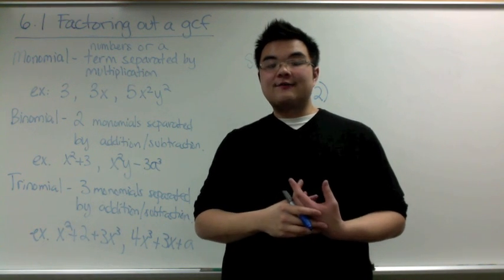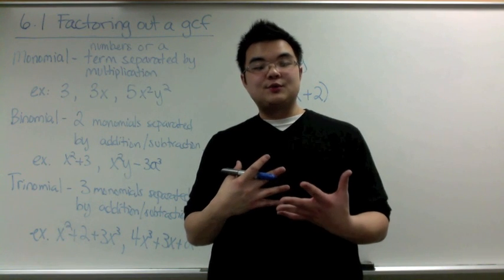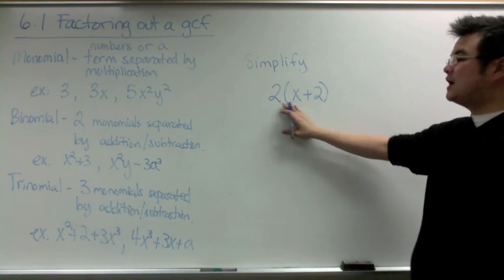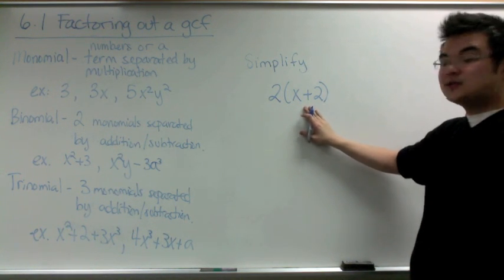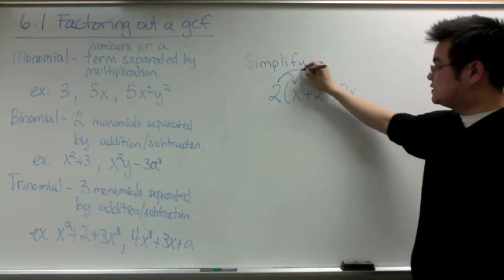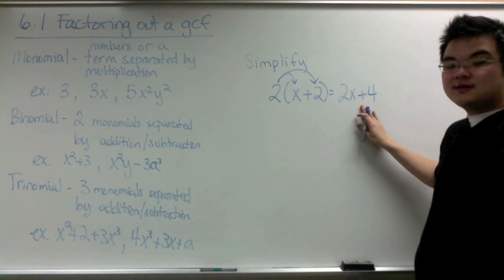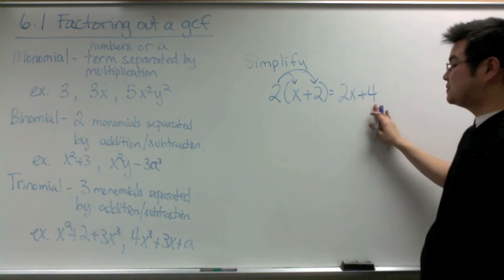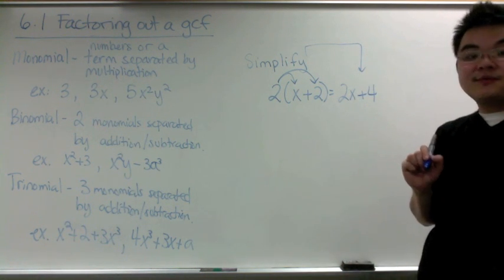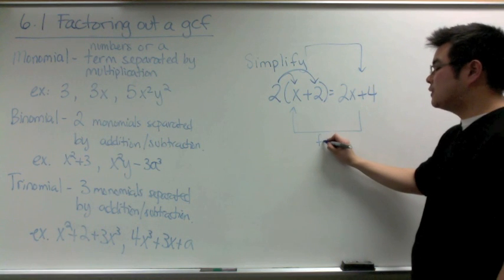Before we factor out a GCF from a binomial or trinomial, I'm going to show you what it looks like going the other way around, which you are used to. For example, if you were asked to simplify 2(x + 2), you would use the distributive property to get 2x + 4. Going from the original expression to 2x + 4 is called simplifying, and going the other way around is called factoring, which is what we're going to do today.